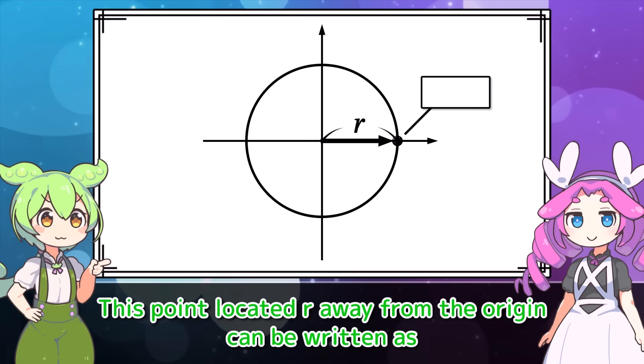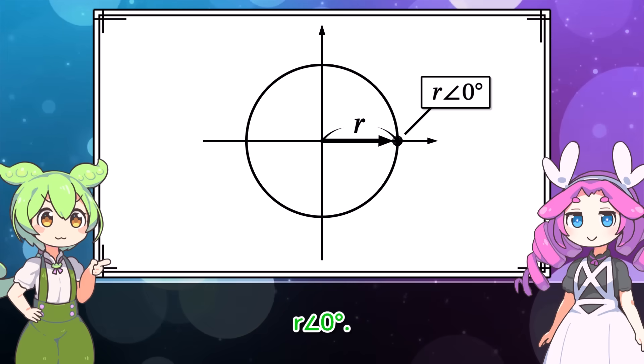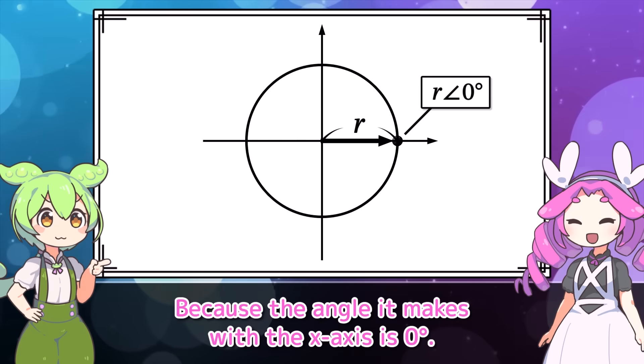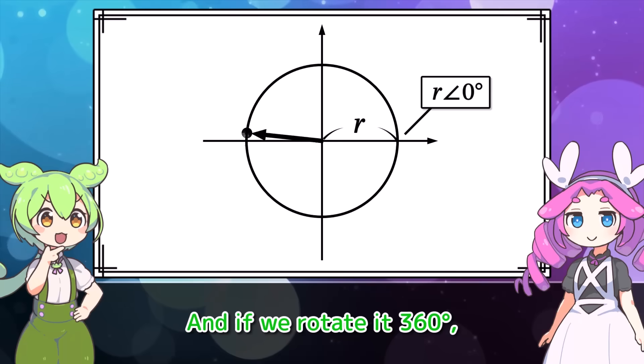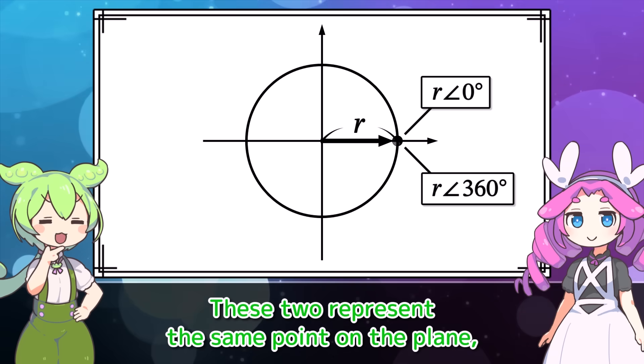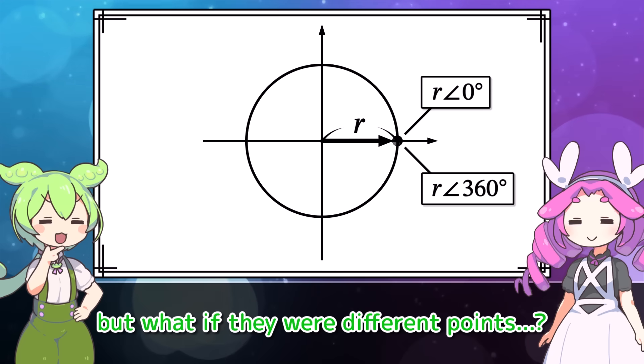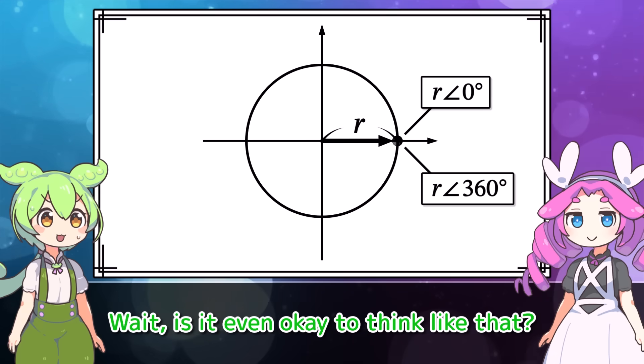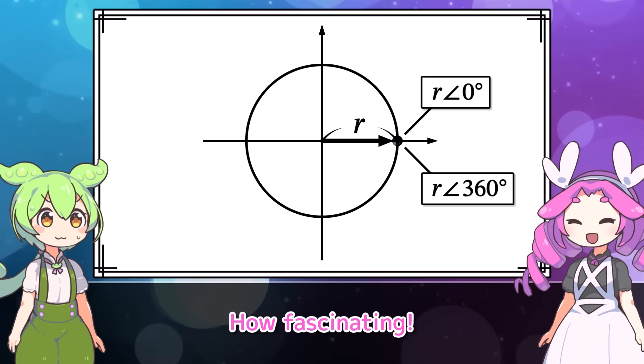Then the position of a point on a plane can be expressed using r and theta. This vector or point can be written as r∠θ. Hmm, I see. Using this, this point located r away from the origin can be written as r∠0°. Because the angle it makes with the x-axis is 0 degrees.